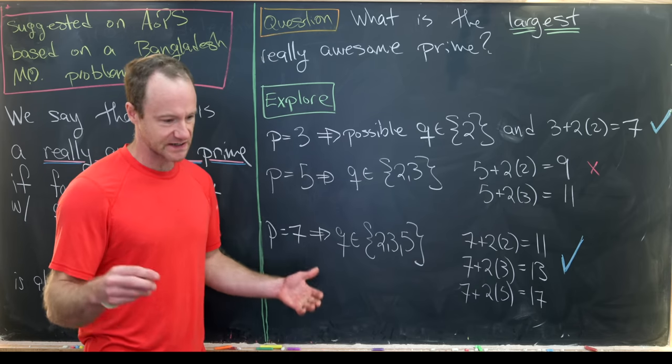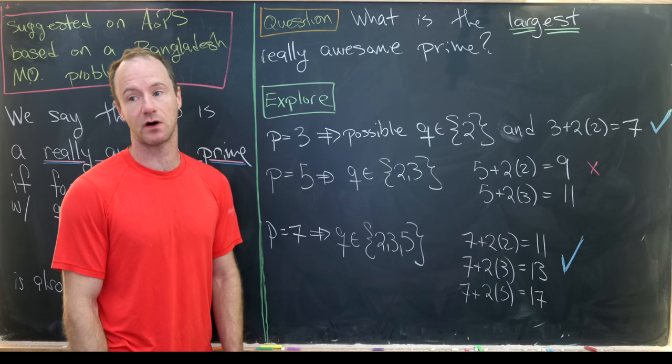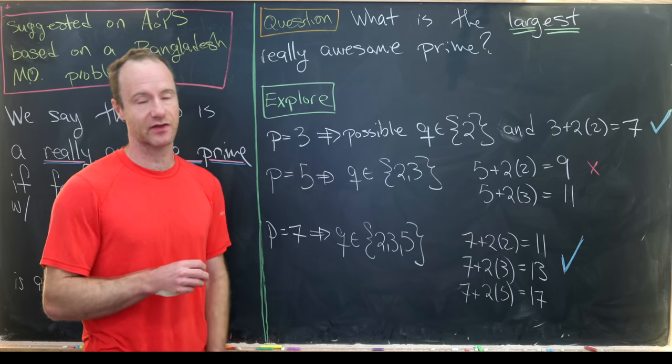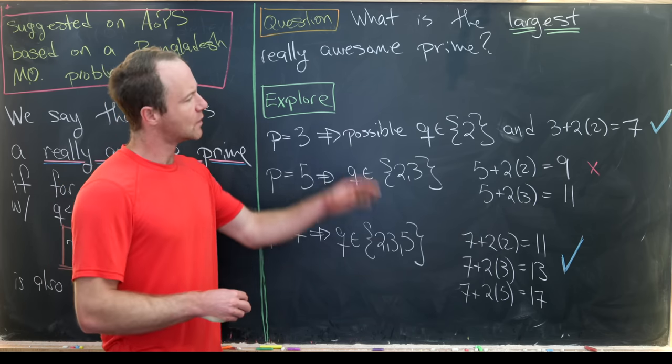Since we're asked to find the largest really awesome prime, that means that this largest is probably quite small. Otherwise, there'd be a ton of work to do. But we know that since it's a math contest type problem, generally the solution is quite short.